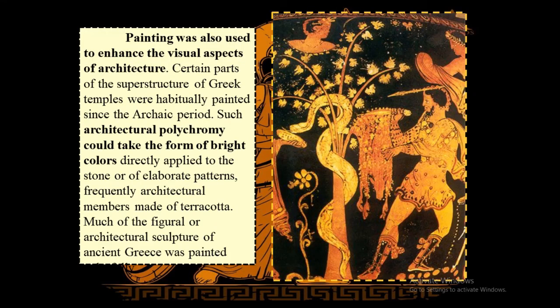Painting was also used to enhance the visual aspects of architecture. Certain parts of the superstructure of Greek temples were habitually painted since the archaic period. Such architectural polychromy could take the form of bright colors directly applied to the stone or of elaborate patterns. Frequently, architectural members made of terracotta and much of the figural or architectural sculpture of ancient Greece were painted colorfully.